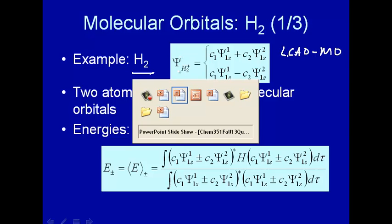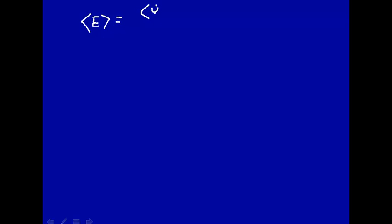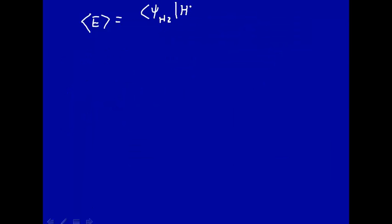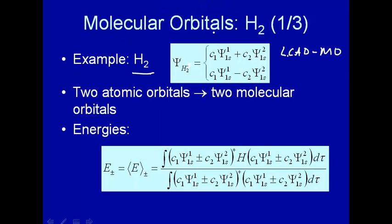There's our trial wave function — and I see a slight mistake here, that should just be H2, not H2+. We're adding and subtracting. What we want is to calculate the expectation value of the energy, or the average energy. That will be the wave function for H2 with this Hamiltonian, and then the wave function for H2. As we said in an earlier lecture, if the wave function is not normalized, you normalize it by dividing by the integral of psi_H2.